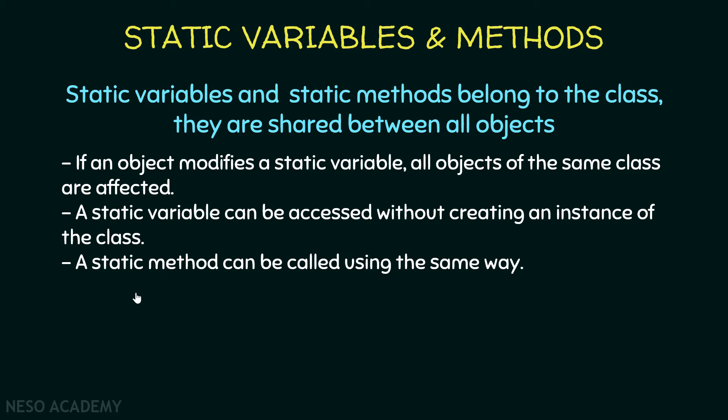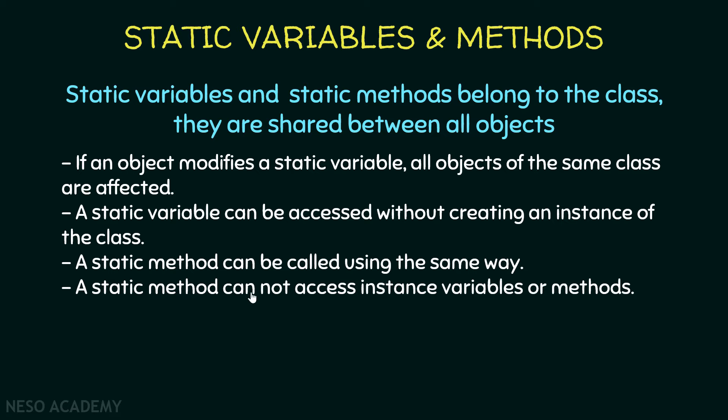The same applies for static methods — a static method can be called using an object or using the name of the class. One important thing: a static method cannot access instance variables or methods. A static method can only access static variables and static methods. So if you try to access a regular method or variable inside a static method and get an error, remember this rule.